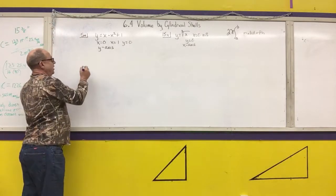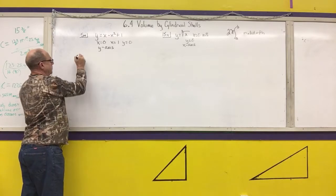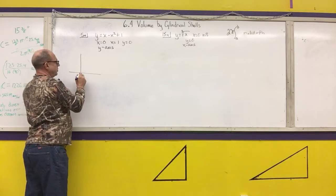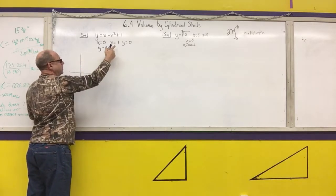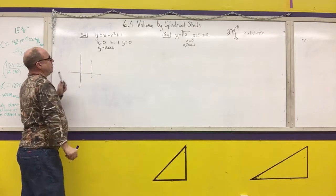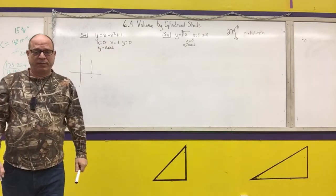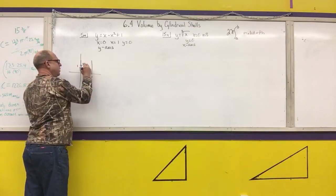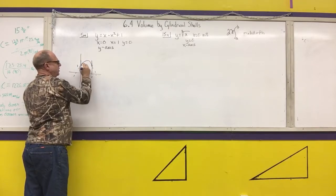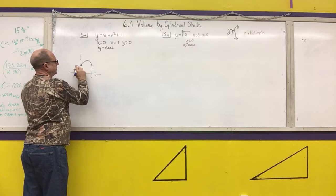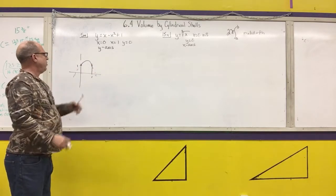The first thing I need to do is draw my curves. x equals 0 is the y-axis, x equals 1 would be this line, and y equals x minus x squared plus 1 is an upside-down parabola. It would continue on this way, but this is the region right here that I want to revolve.